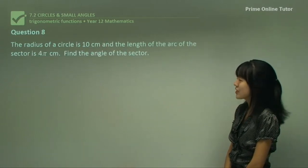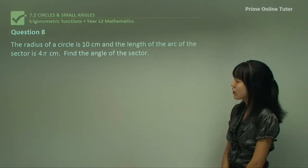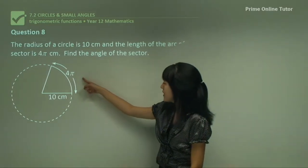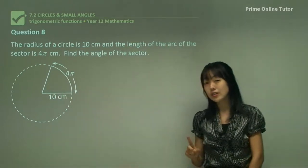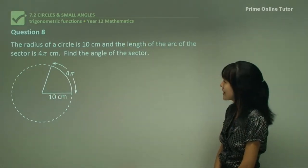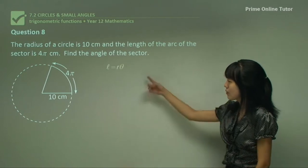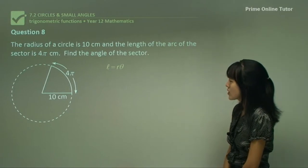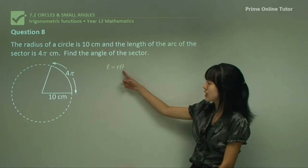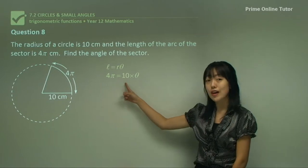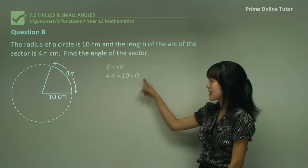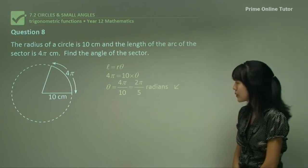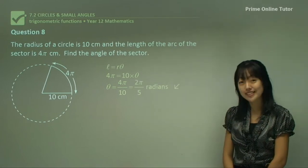Question 8: the radius of a circle is 10 and the length of the arc is 4π. This time we have to find the angle in terms of pi radians. Using L equals R theta, substitute the known values and make theta the subject. We get theta equals 4π/10, which simplifies to 2π/5 radians.